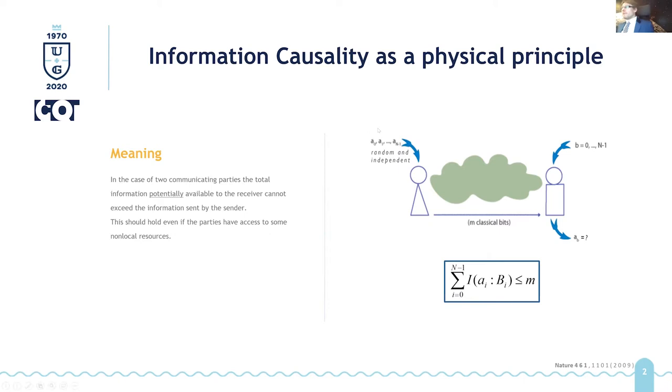Being more specific if we have a protocol shown on the right hand side of the screen, the receiver is getting n numbers which are random and independent and she sends n classical bits to the receiver then the total amount of information that the receiver has about all these numbers cannot exceed the size of the message. And this happens even if the receiver is somehow limited only to access a part of the data at the same time.